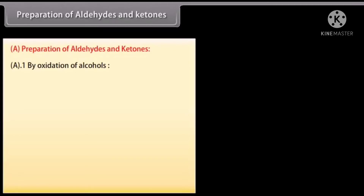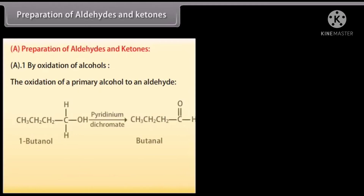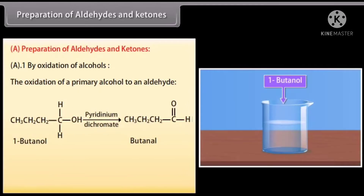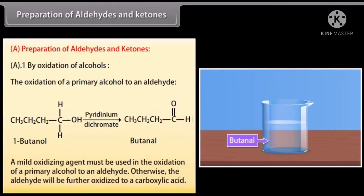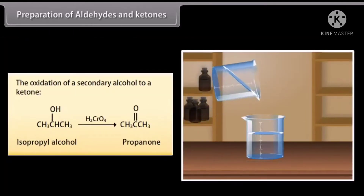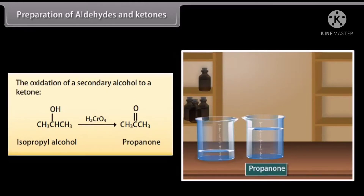By oxidation of alcohols: a primary alcohol can be oxidized to an aldehyde. Butanol is oxidized in the presence of pyridinium dichromate to form butanal. A mild oxidizing agent must be used; otherwise, the aldehyde will be further oxidized to a carboxylic acid. For the oxidation of a secondary alcohol to a ketone: adding chromic acid to isopropyl alcohol forms propanone, which is a ketone.